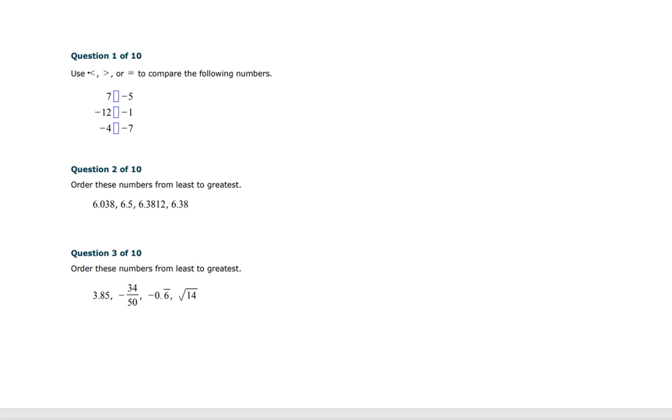So question number one, use less than, greater than, or equal to compare the following numbers. So this is pretty self-explanatory. These should seem really easy for you. 7 is bigger than negative 5, negative 1 is bigger than negative 12, and negative 4 is bigger than negative 7. This right here is something that you are going to need to be able to do on your test for this unit. So heads up on that.